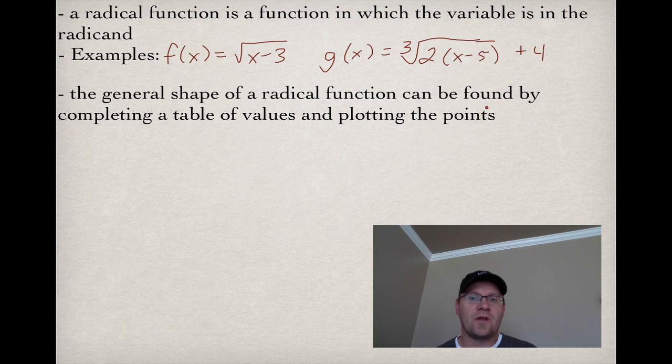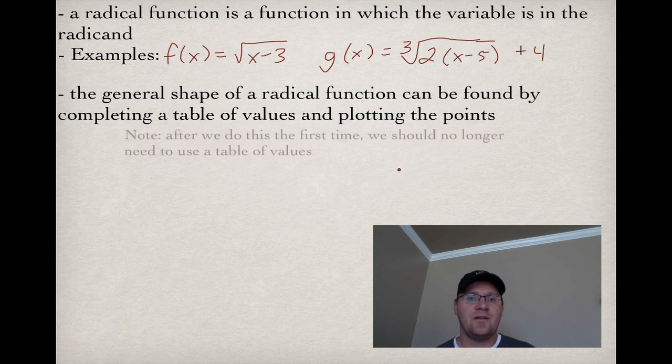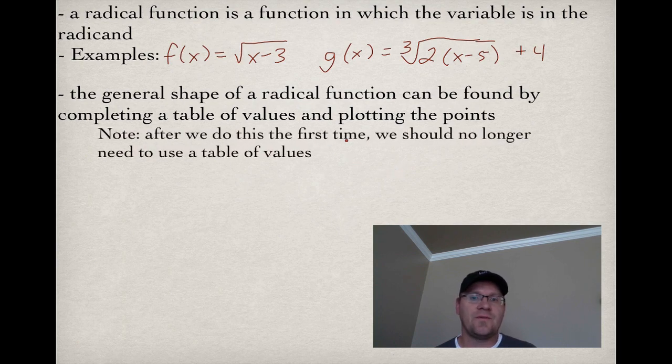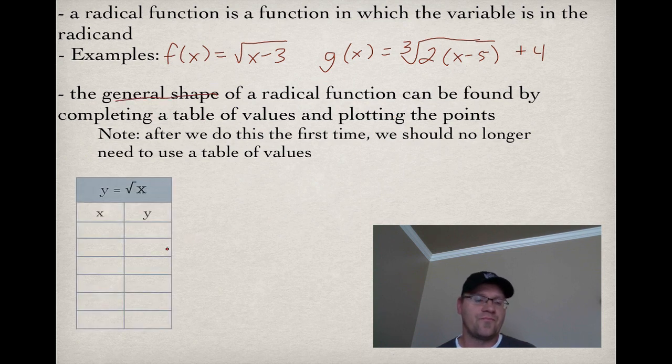The general shape of a radical function can be found by completing a table of values and plotting the points. We've done this for functions in the past. Note, after we do this the first time, we should no longer need to use a table of values. We're just doing this to find the general shape. So here's our function: y equals root x, or f(x) equals root x.